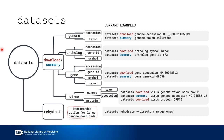I like to think about the datasets command as something like this: 'Hey datasets, I would like to download a genome for the taxon,' and then you fill in the blanks. In this example here, we use Ailuridi, which is the red panda family.